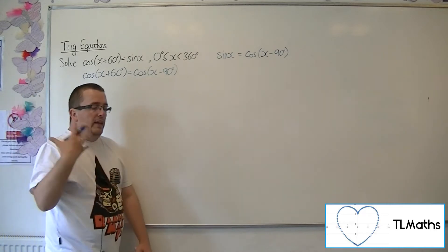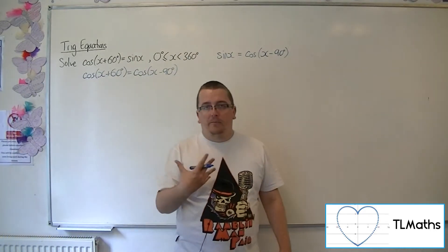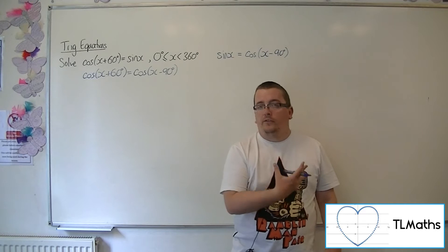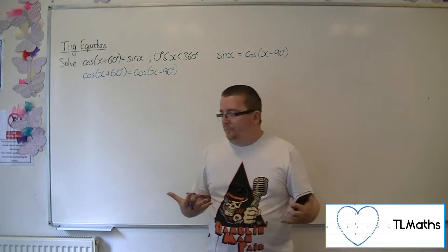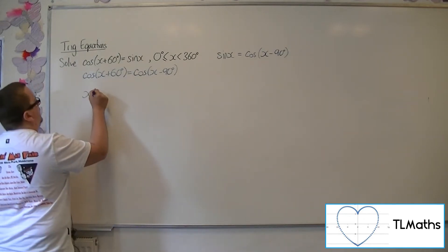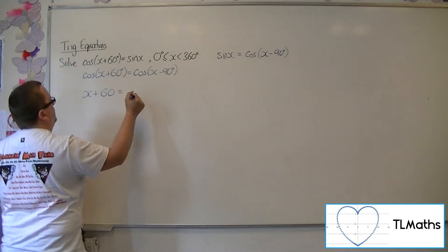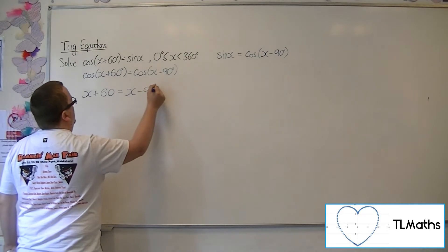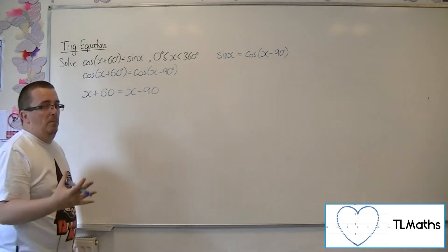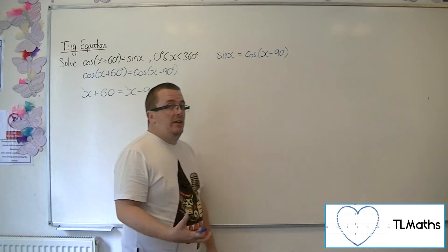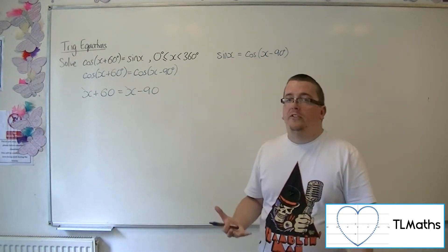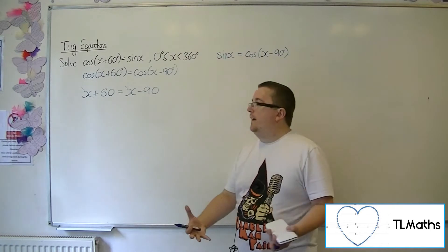Now if you have cosine of something equals cosine of something else, then surely the two somethings must be the same. So x + 60 must equal x - 90. But the problem here is that if you subtract x from both sides, then suddenly you've got 60 equals minus 90, which is clearly wrong. So there's no solution from that.